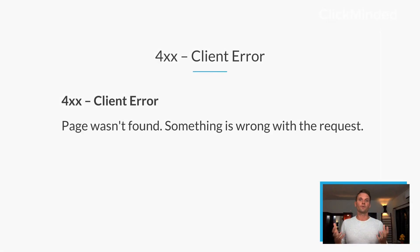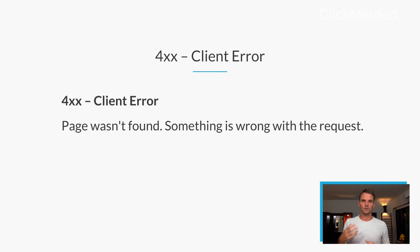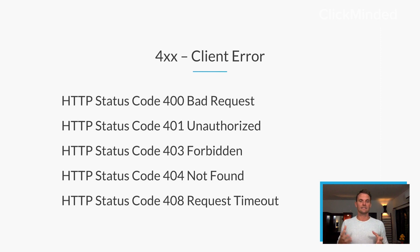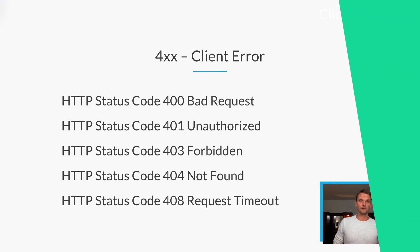The 400 block is for client errors. That means the page wasn't found — something is wrong with the request; whatever is happening on the client side is the issue. A 400 might be a bad request, a 401 unauthorized, a 403 forbidden. We're going to talk about the most important ones a little bit later, but the basic idea is that any status code that comes in as a 400 is a client error.